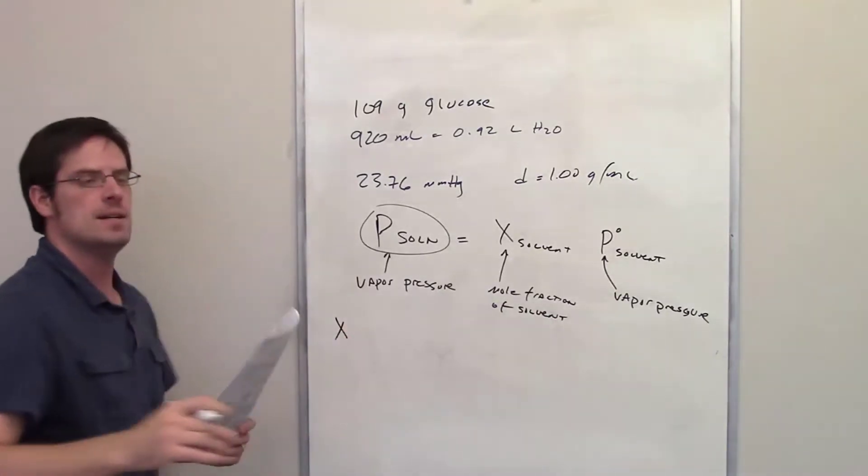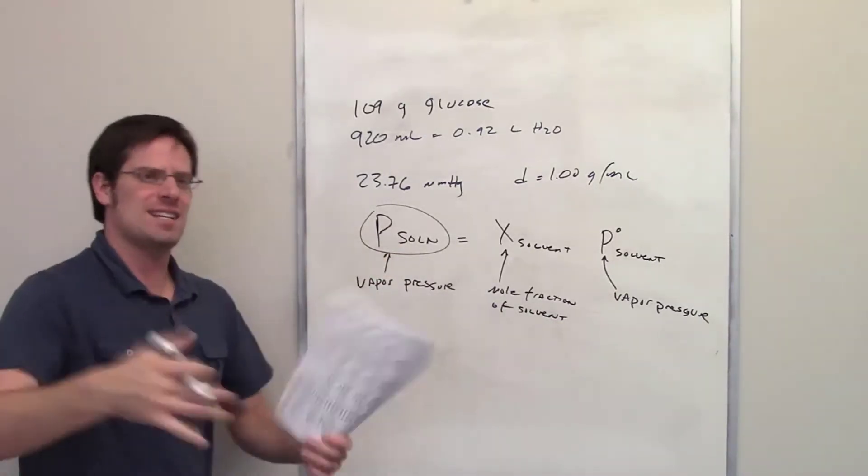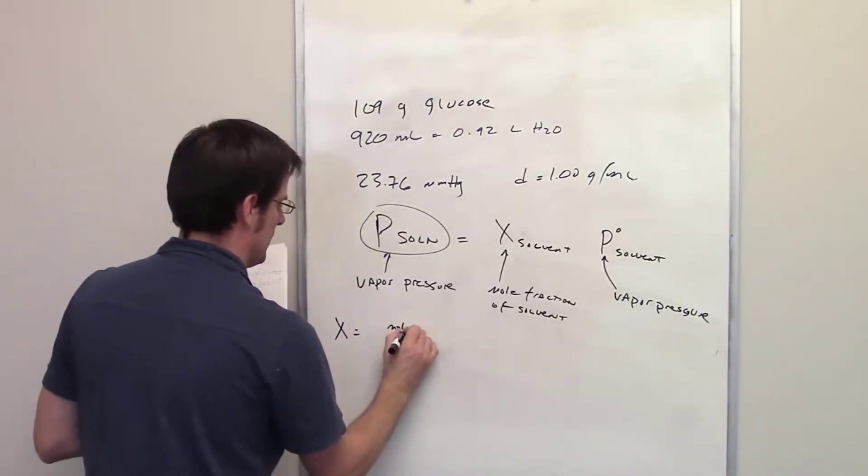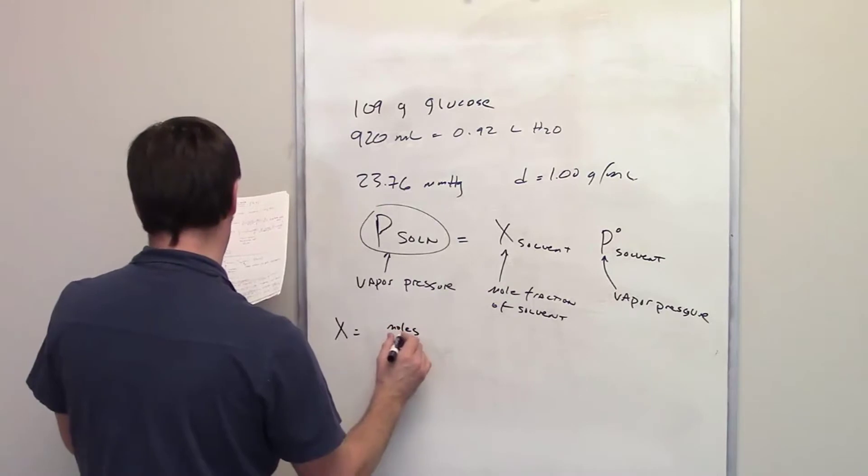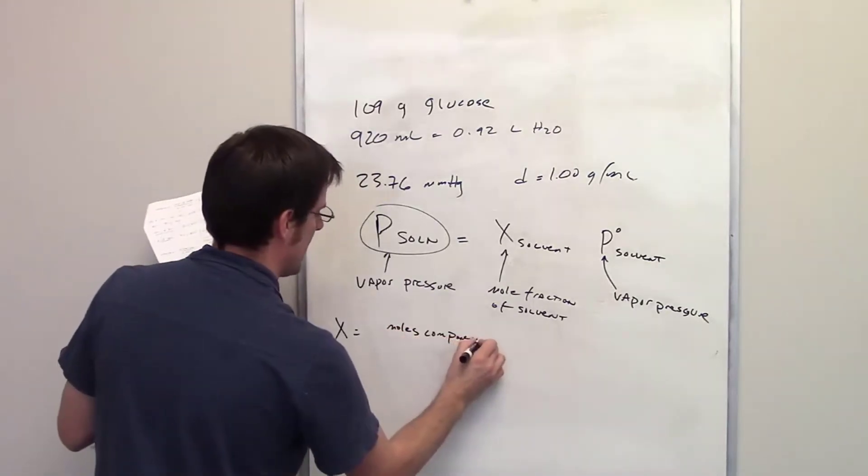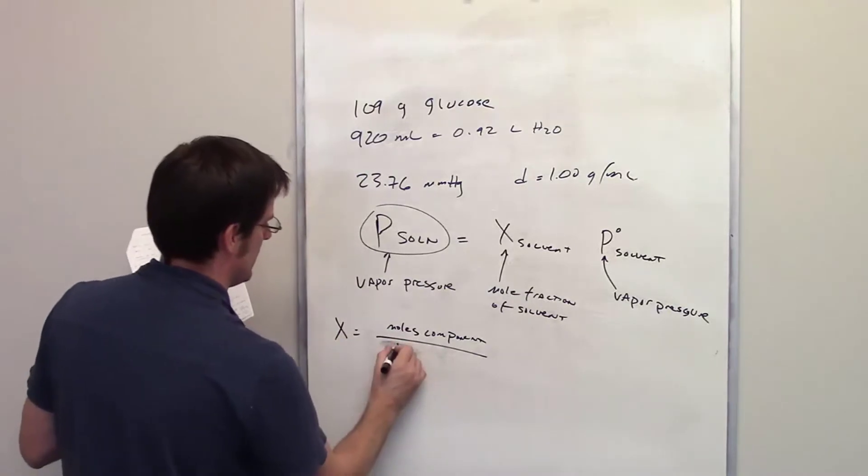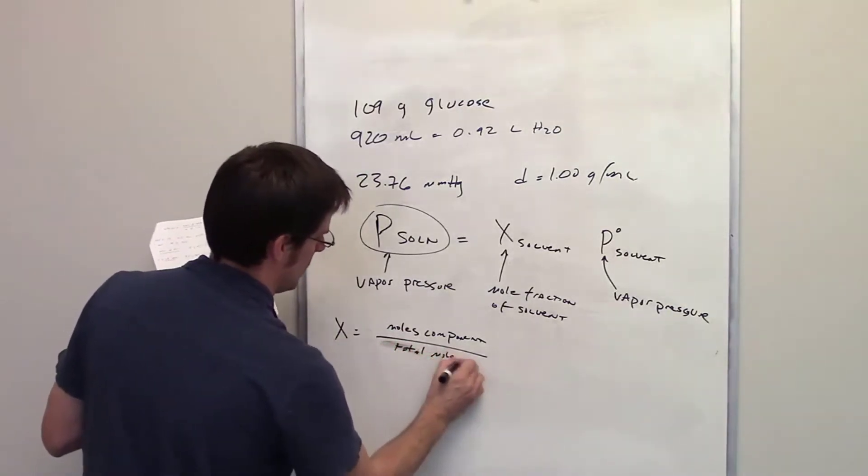Mole fraction is going to be equal to the number of moles of the component in question divided by the total moles of the solvent and solute together.